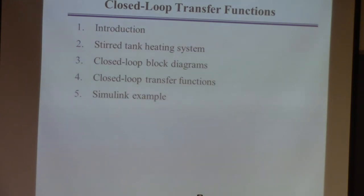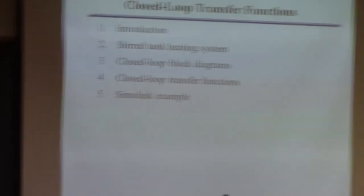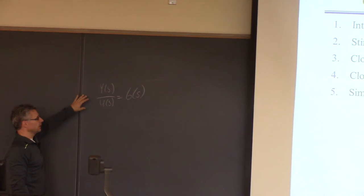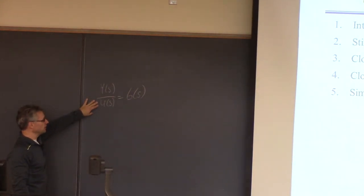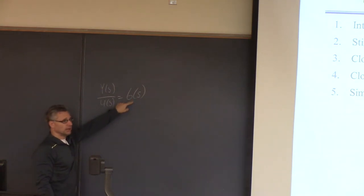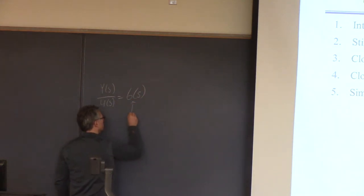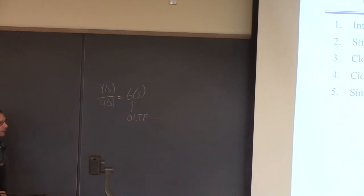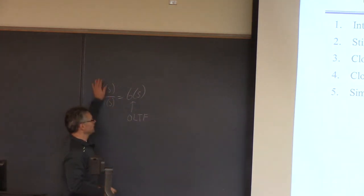I hope you're familiar with this. We have a set of differential equations, we linearize them if necessary, we take the Laplace transform, we rearrange the resulting algebraic equations, and we find the relationship between the manipulated input U and the output Y — that thing we call G. This is what I'll call the open loop transfer function. It represents the dynamics of the process. This is if there's no control — we did this without even talking about control. If we have control, we're going to get a different type of thing called the closed loop transfer function.